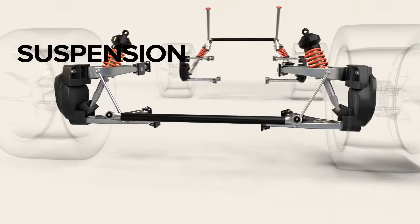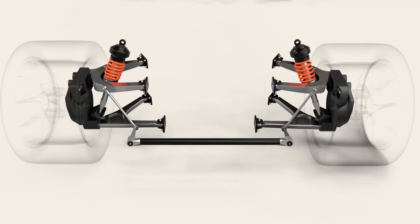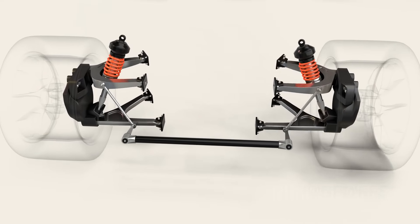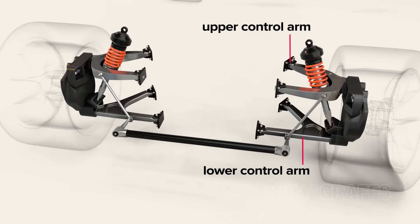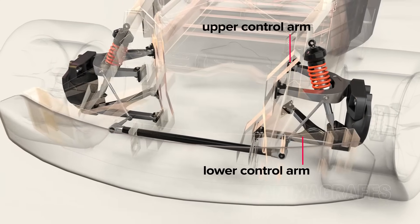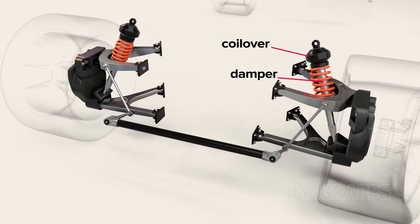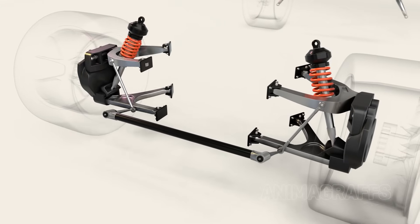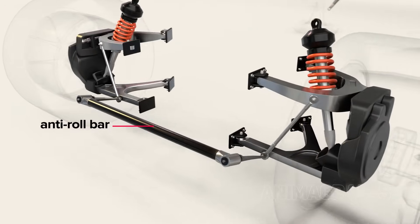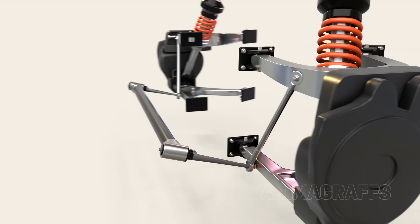Suspension is fully independent front and rear, so each wheel can move individually. Upper and lower control arms bolt directly to the chassis from the upright assembly. The adjustable shocks are coilover type, where dampers are nested inside the springs.